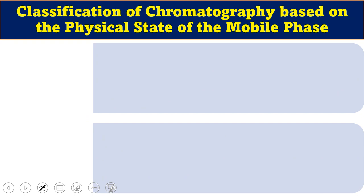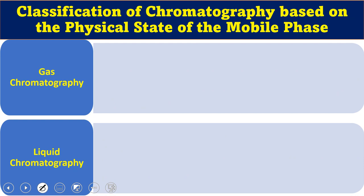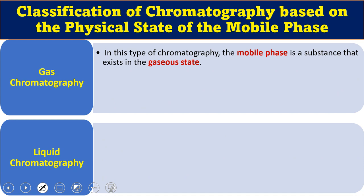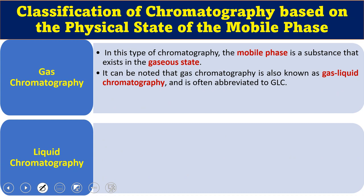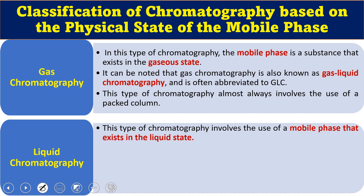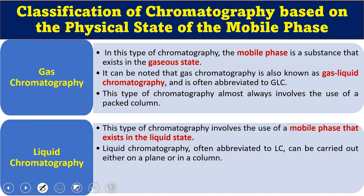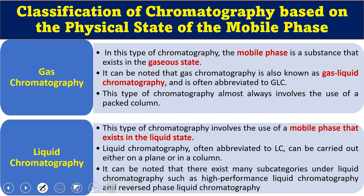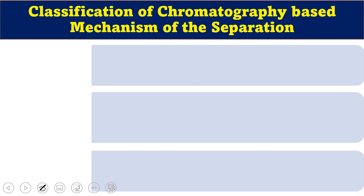Classification based on the physical state of the mobile phase gives two types: gas chromatography and liquid chromatography. In gas chromatography (also known as gas-liquid chromatography, GLC), the mobile phase is in a gaseous state, and this type almost always involves the use of a packed column. In liquid chromatography (LC), the mobile phase is in a liquid state and can be carried out either on a plane or in a column. There are many sub-categories under liquid chromatography, such as HPLC (high performance liquid chromatography) and reverse phase liquid chromatography (RPLC).